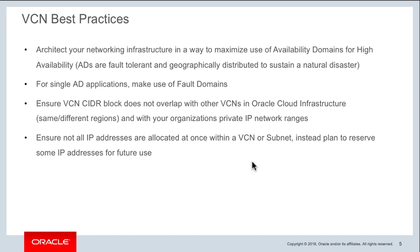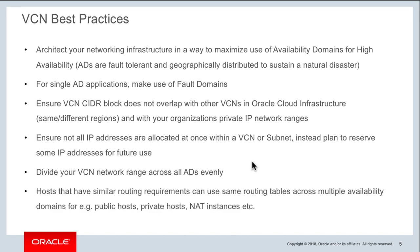When creating the VCN, make sure you are evenly distributing your subnets across all availability domains so that your application has a highly available networking infrastructure across all three ADs. In cases where hosts in different subnets have similar routing requirements, you can use the same route table across multiple subnets. For example, multiple public hosts that all use the internet gateway can share a common routing table. Similarly, private subnets that all forward traffic to a NAT gateway or firewall instance can share a common routing table.